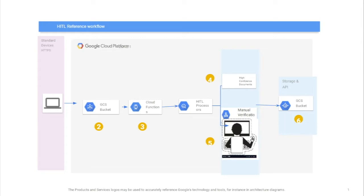Usually there is a lot of manual interaction involved in processing these documents, and Document AI helps automate a major portion of that. Google has enabled a lot of parsers like invoice, forms, expense, W2, and 1040 parsers — automating most of the processors so that we can just pass a document and extract the text for further analysis.